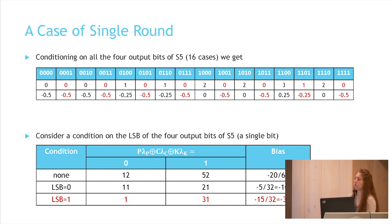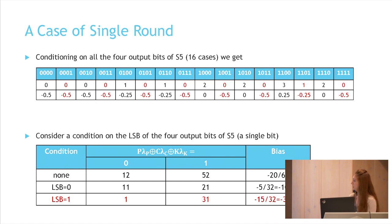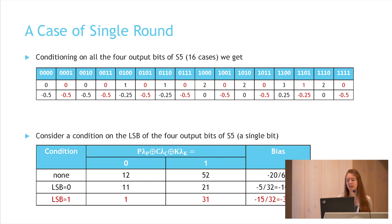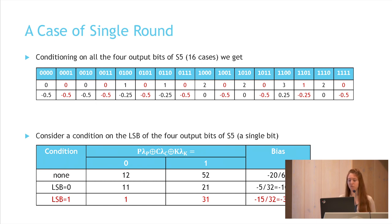When conditioning on LSB equals 0: in 11 cases the parity is 0, and in 21 the parity is 1. When conditioning on LSB equals 1 (the rare case): in 1 case the parity is 0, and in 31 the parity is 1. So considering only encryptions in which LSB is 1, the bias grows from minus 20/64 to minus 30/64, while the bias of the rest of the data reduces to minus 10/64.